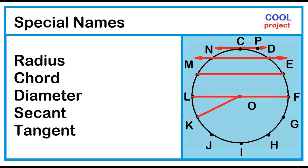Again, the special names related to circle: Radius, Chord, Diameter, Secant, Tangent. Examples: Segment OK, Segment M-E, Segment L-F, Line N-D, Line C-P.